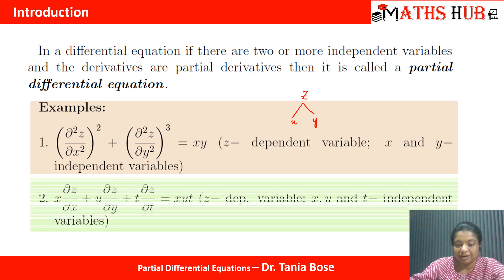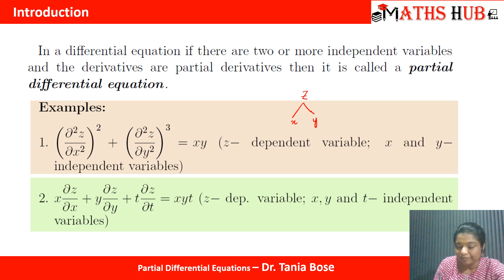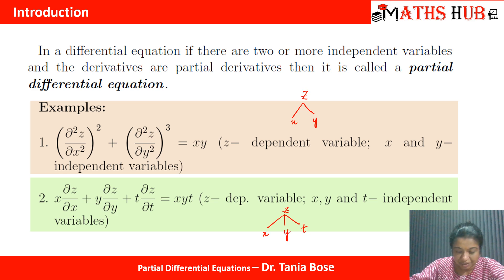Another example: x·(del z/del x) + y·(del z/del y) + t·(del z/del t) = xyt. Here the differential coefficients are del z/del x, del z/del y, and del z/del t, so the independent variables are three: x, y, and t. This is again a partial differential equation.